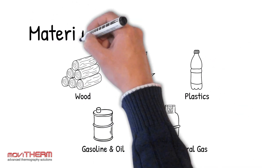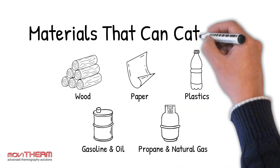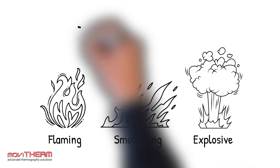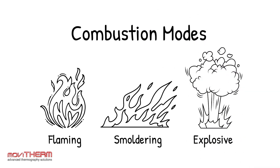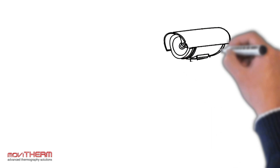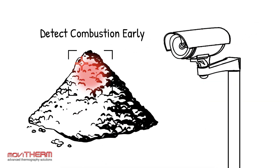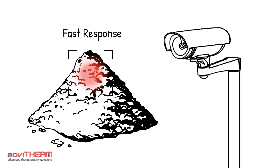In conclusion, understanding the different types of materials that can catch fire and their combustion modes is essential for fire prevention and safety. Early fire detection systems that use infrared cameras can detect these combustion modes early, allowing for fast response and minimizing damage.